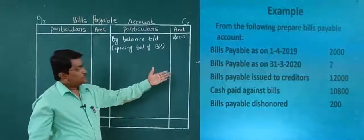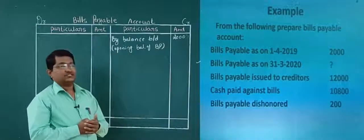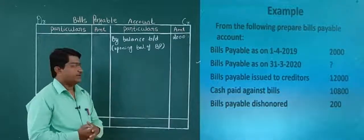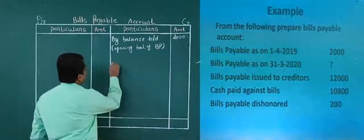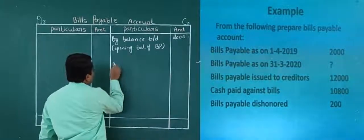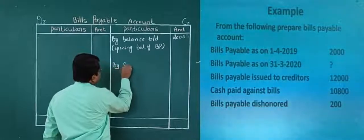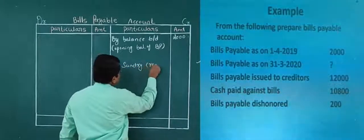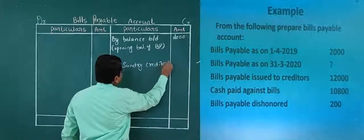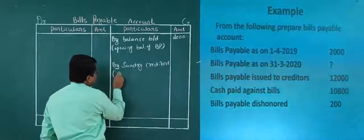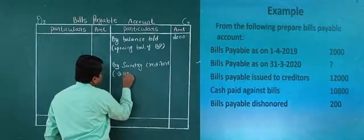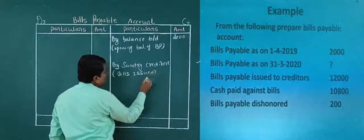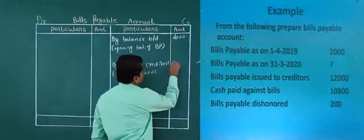Next, bills payable issued to creditors — yes, issued to creditors goes to the credit side. So here I write: by sundry creditors — that is bills issued. What is the amount? Yes, it is 12,000.